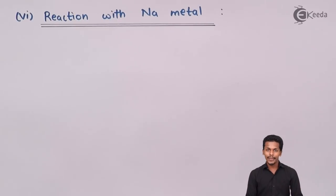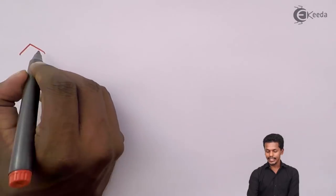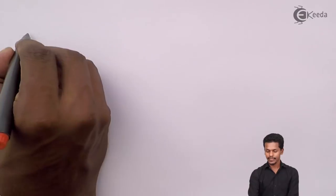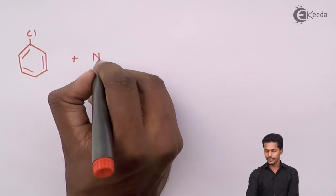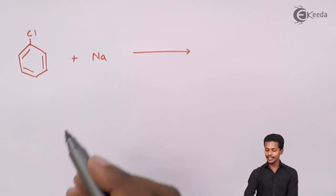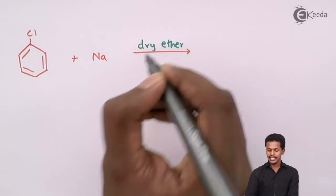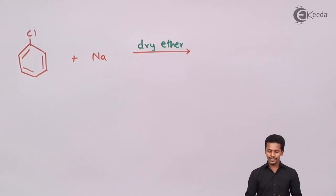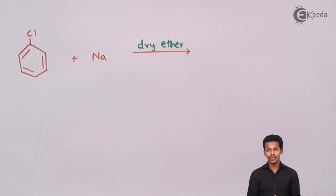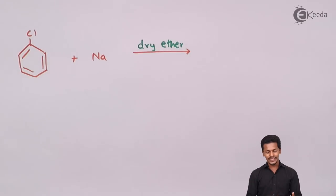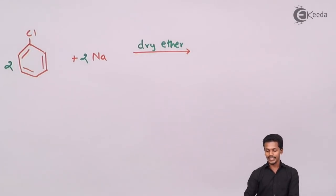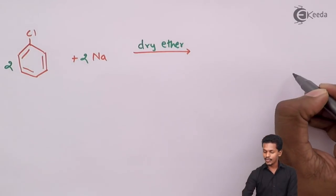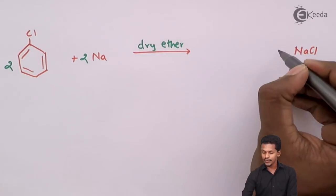Let us represent the Fittig reaction: chlorobenzene treated with sodium metal in presence of dry ether. We balance the reaction — 2 moles of chlorobenzene along with 2 moles of sodium metal gives a byproduct of 2 moles of NaCl. The coupling reaction takes place such that the two phenyl groups couple together to give biphenyl. This kind of reaction is known as the Fittig reaction.